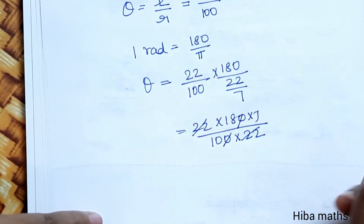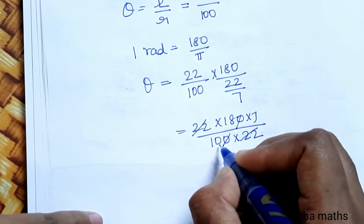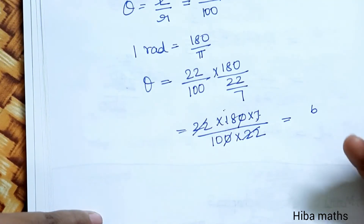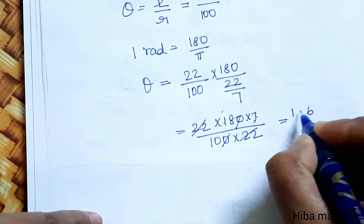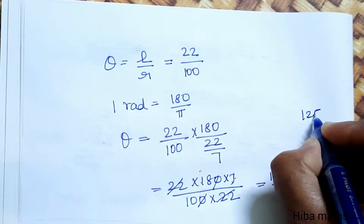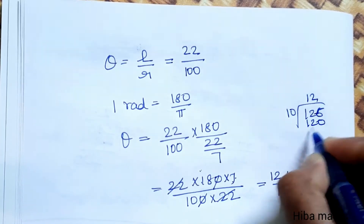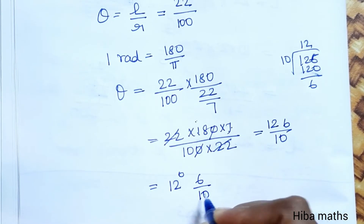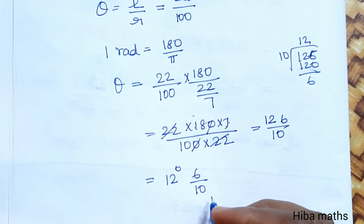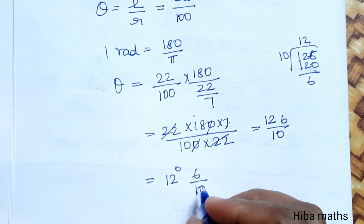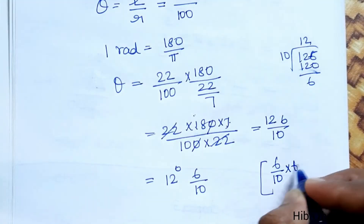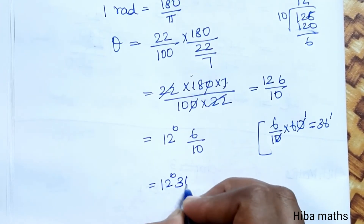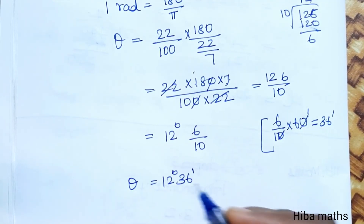After cancelling the 22s, we simplify 180 into 7 divided by 100. Dividing by 10, we get 126 by 10, which equals 12.6 degrees. Converting 0.6 degrees to minutes: 0.6 into 60 gives 36 minutes. So the answer is 12 degrees 36 minutes. That is very easy. You can try it. Thank you so much for watching.